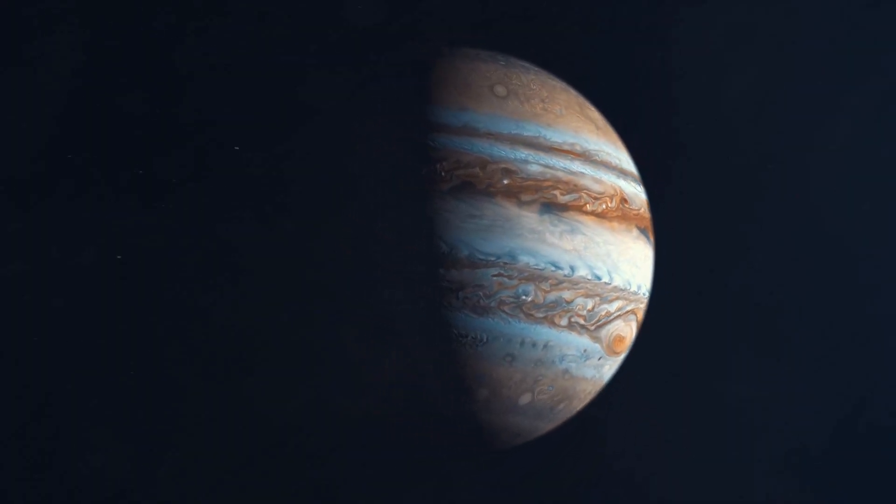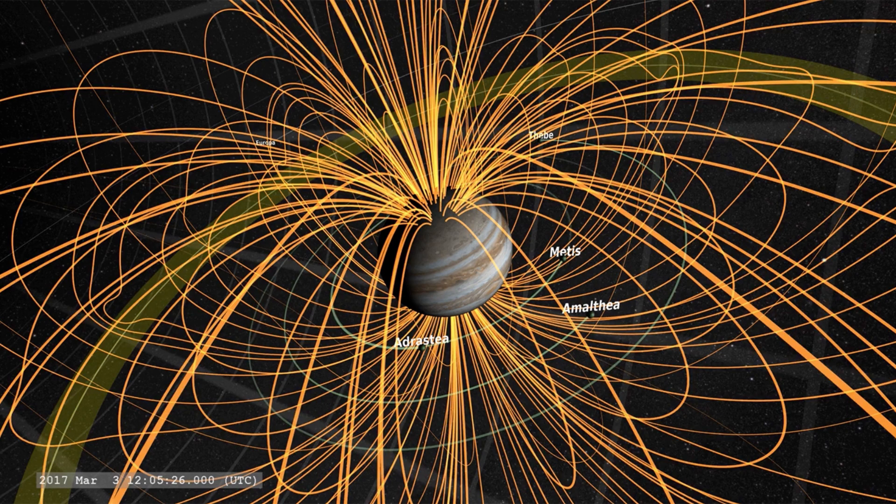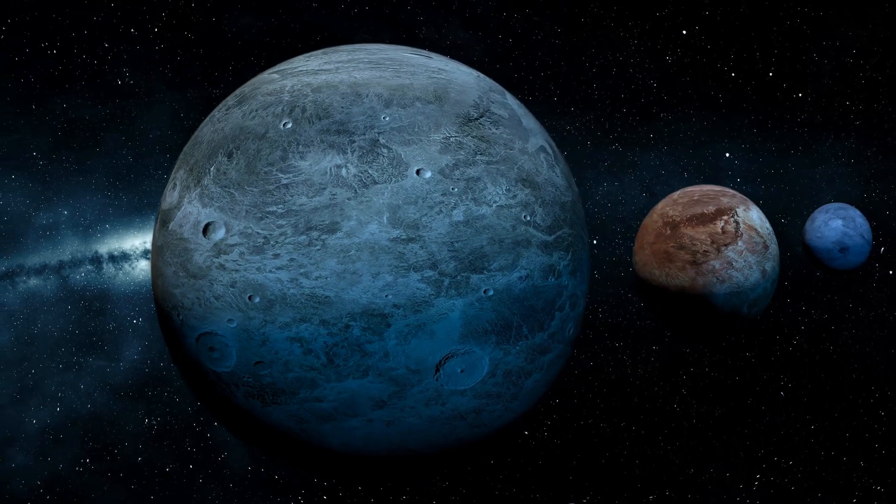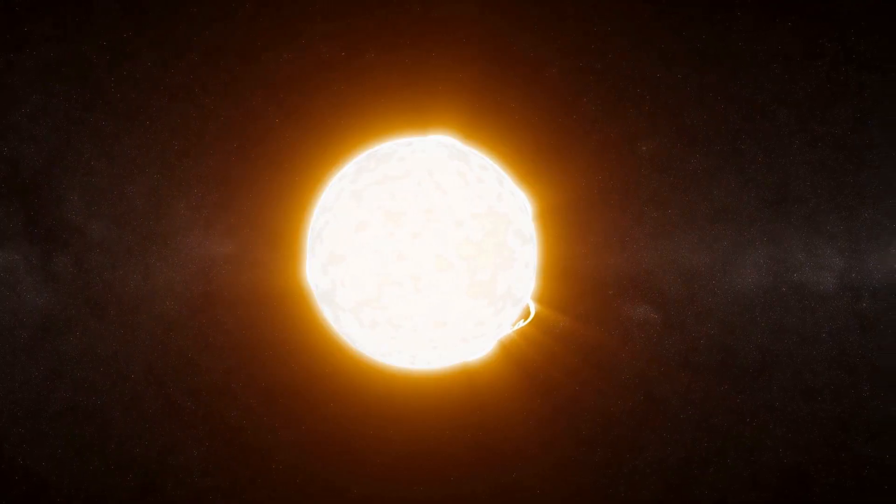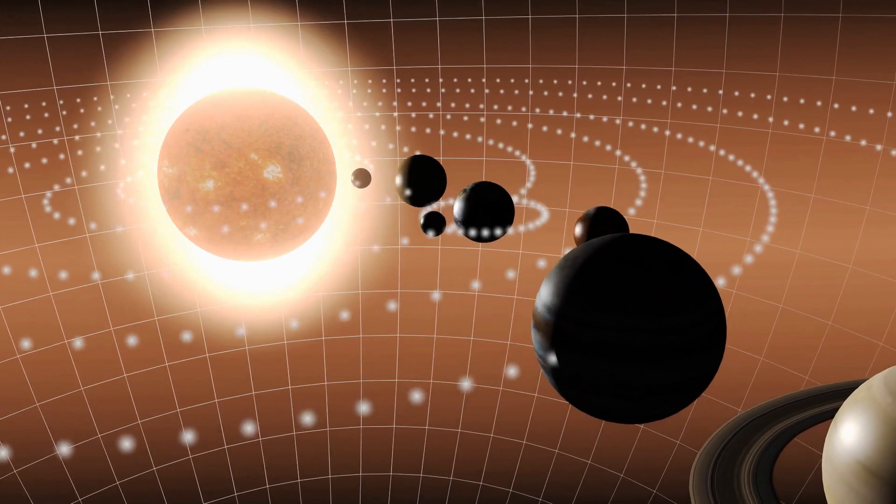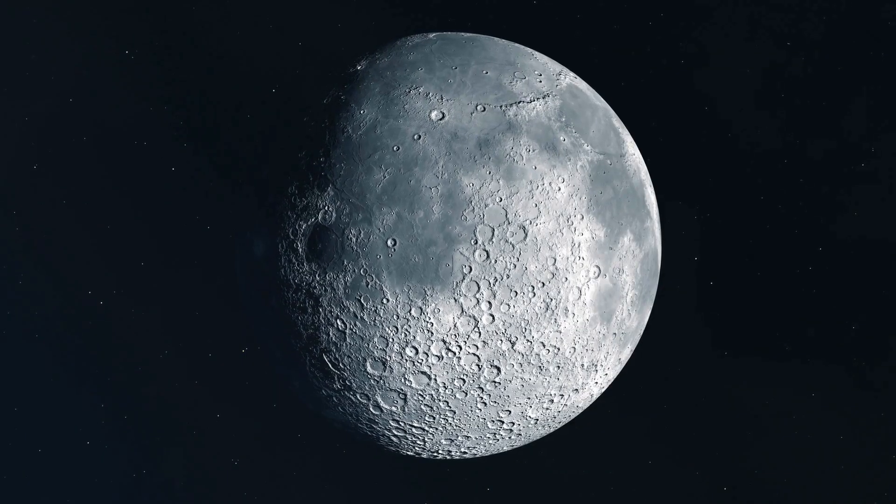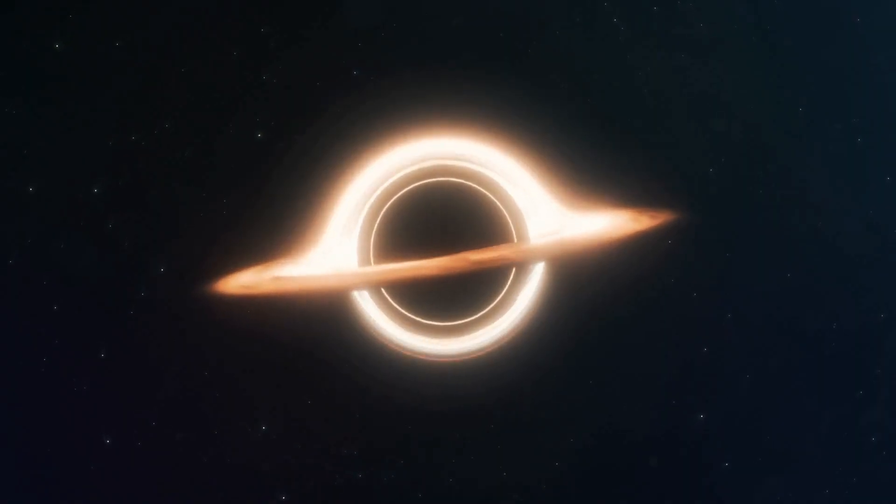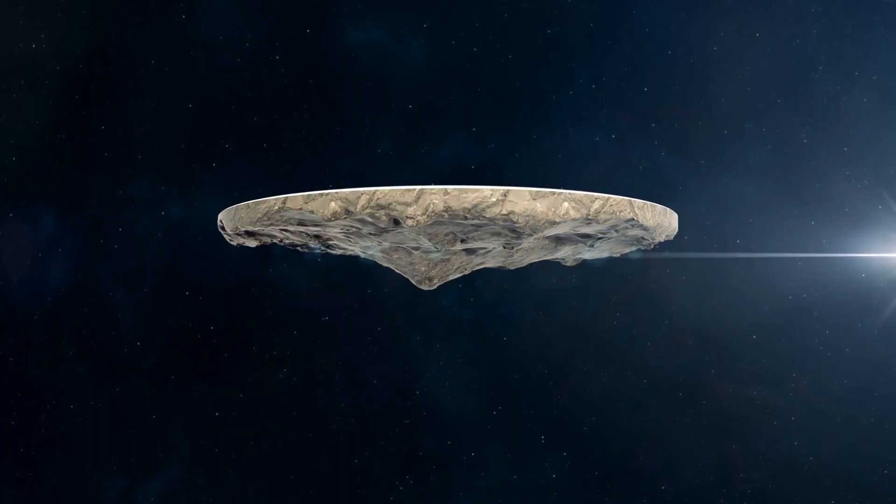Gravity is something very interesting because it pulls equally from all directions, and that's why most things in space are a globe. You could look at stars, gas planets, rocky planets, moons, and even black holes.